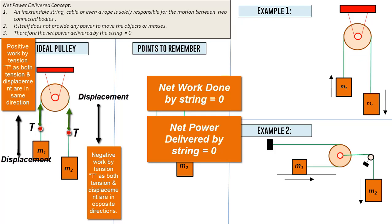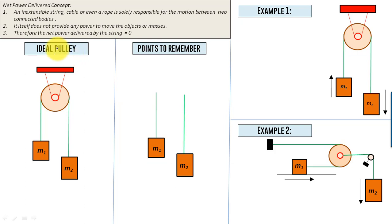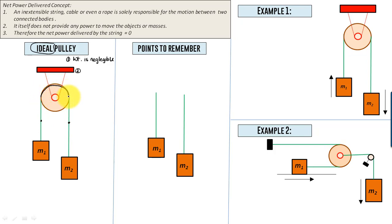So net power delivered equals zero, and this is the logic we use to develop relationships between different blocks connected via strings and pulleys. Now let's understand what exactly an ideal pulley is. There are two conditions: condition one — an ideal pulley is one whose weight is negligible. Condition two — the tension on both sides of the string remains the same, because friction is neglected.